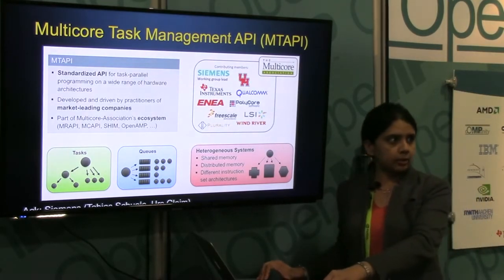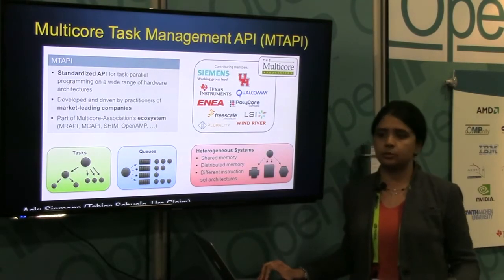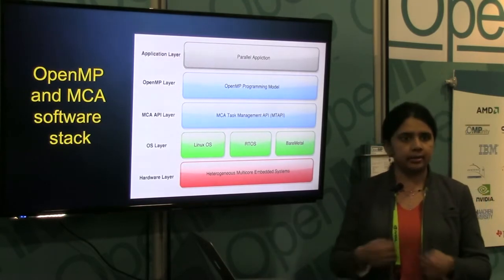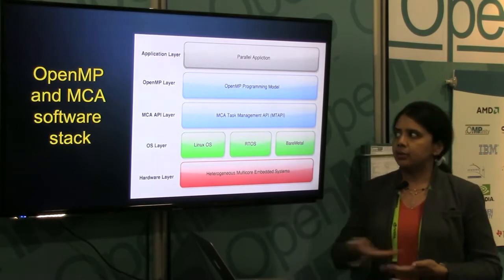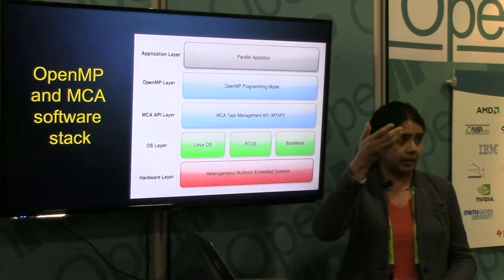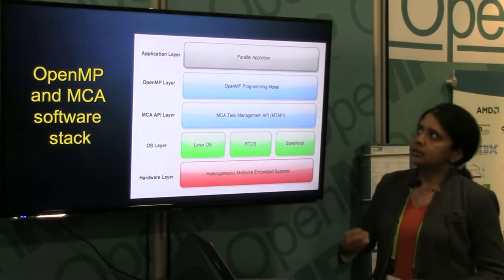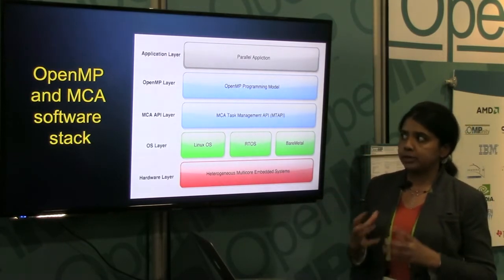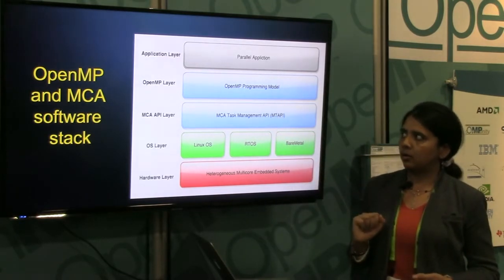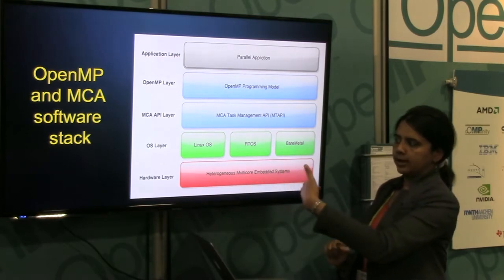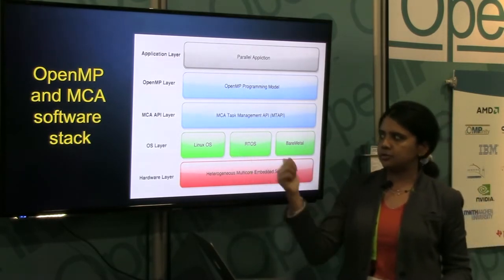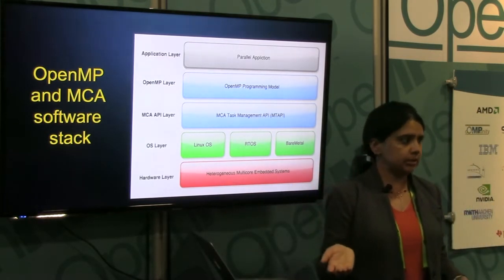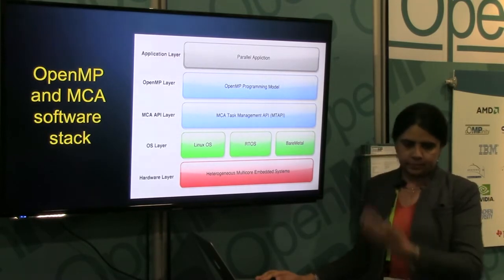We know both MCA and OpenMP are industry standards. With a powerful heterogeneous embedded system board, how do you program it? The idea we came up with was to create a translation between OpenMP and MCA — use MCA as the layer just above the hardware and abstract it further with OpenMP on top, to keep programming simple. The programmer programs in OpenMP and doesn't worry about the details; the OpenMP-to-MCA translation handles that. Then you have architectures with different types of OSes or even bare metal, and finally the heterogeneous system as underlying hardware.